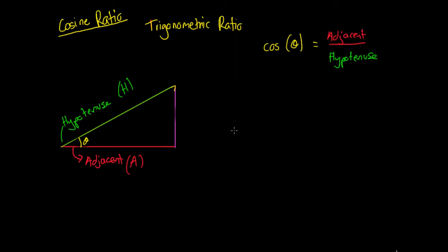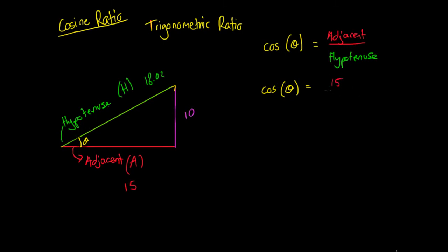So all this probably isn't very clear, but if we start putting some examples to it, it might get a little clearer. So if we say our adjacent side has a length of 15 and our opposite side has a length of 10, then we can use Pythagoras to work out that our hypotenuse is going to have a length of 18.02.